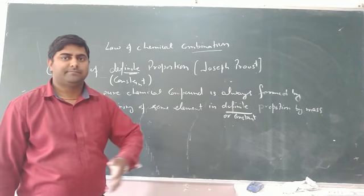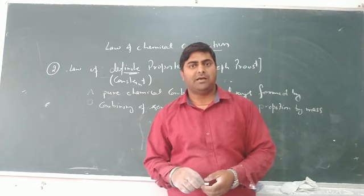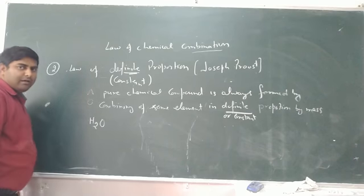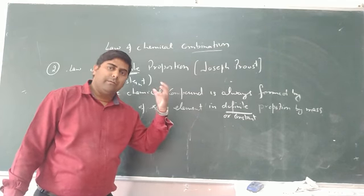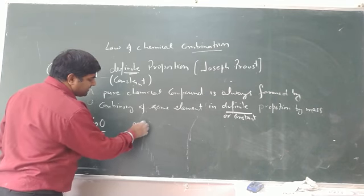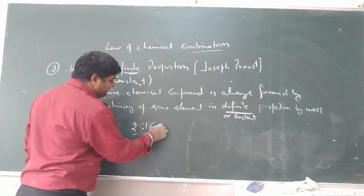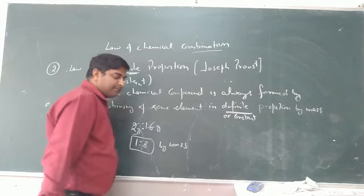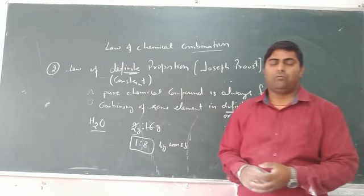Whenever two or more atoms combine in a fixed proportion by mass, we get a pure substance. For example, take water. Water taken from any source — whether from a river, ocean, sea, or rain — always has hydrogen with a mass of 2 grams and oxygen with a mass of 16 grams. So it is always in a 1:8 ratio by mass. Whenever hydrogen and oxygen combine in this fixed ratio, we always get water.